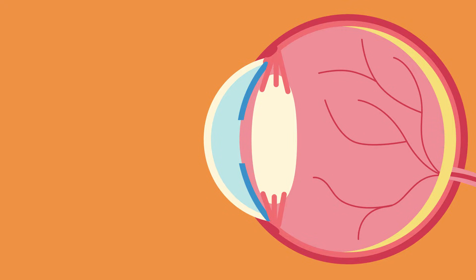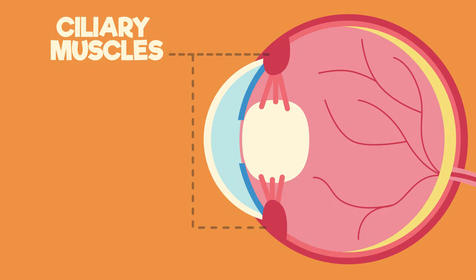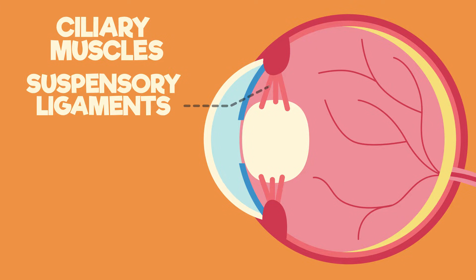Changing the thickness and curvature of the lens is done by the ciliary muscle, contracting and relaxing, which are connected to the lens by suspensory ligaments.